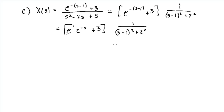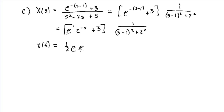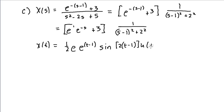You can find this in the table — it becomes an exponential e to the t times sine of 2t. Since that's all being multiplied by e to the minus s in the first term, that gives a delay of 1, with the constant e in front. There's also a factor of 1.5 because I need to get a 2 in the numerator. So this becomes 1.5 times e times e to the (t minus 1) times sine of 2(t minus 1) times u of t minus 1.